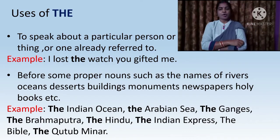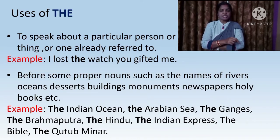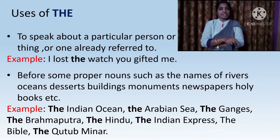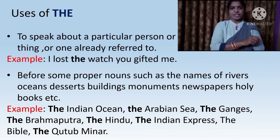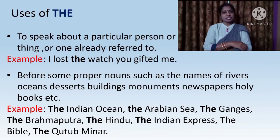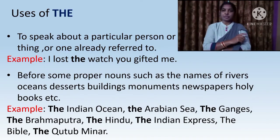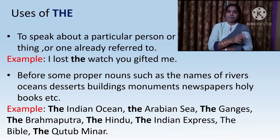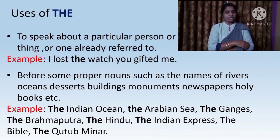We use 'the' before the names of proper nouns of seas, oceans, rivers, holy books, newspapers, buildings, monuments, deserts, etc. For example: the Indian Ocean, the Arabian Sea, the Ganges, the Brahmaputra, the Indian Express, the Hindu, the Qutub Minar, the Bible. So 'the' is used before these proper nouns.